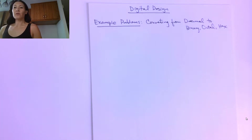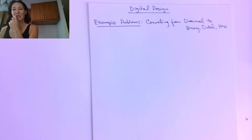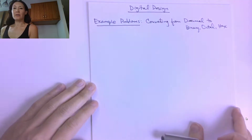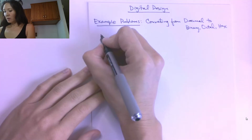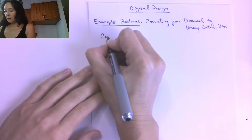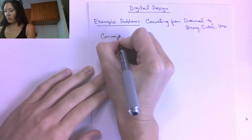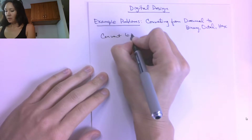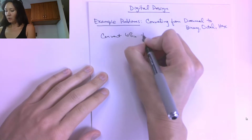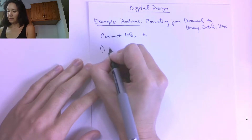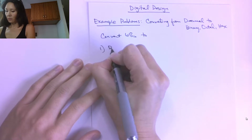Let's practice converting a decimal base 10 number to octal, hex, and binary using our iterative division algorithm. To start, let's convert 68 in decimal — first, let's convert it to binary.